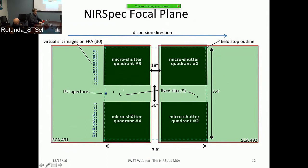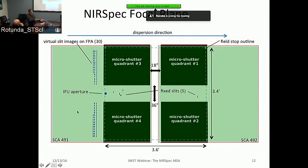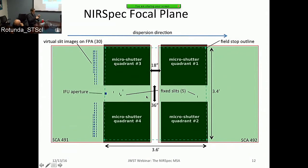The field of view is not contiguous because regions between quadrants are blocked to sky light, except for the fixed slits. The fixed slit data are imaged onto detector areas not overlapping with MSA data, so both can coexist simultaneously. The dispersion direction of the data on the detectors runs horizontally, and I'll show examples of that later on.